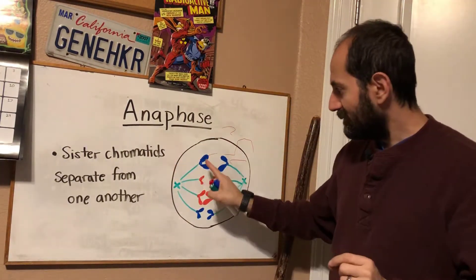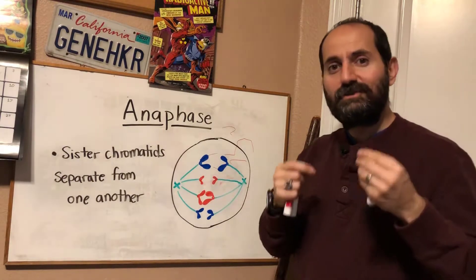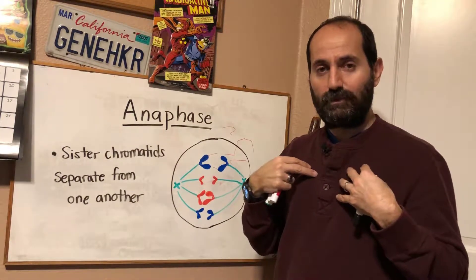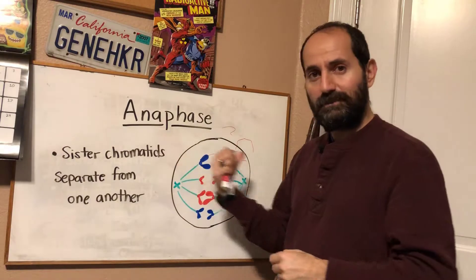The sister chromatids are actually moving themselves. They're moving themselves to the opposite poles. You know how?